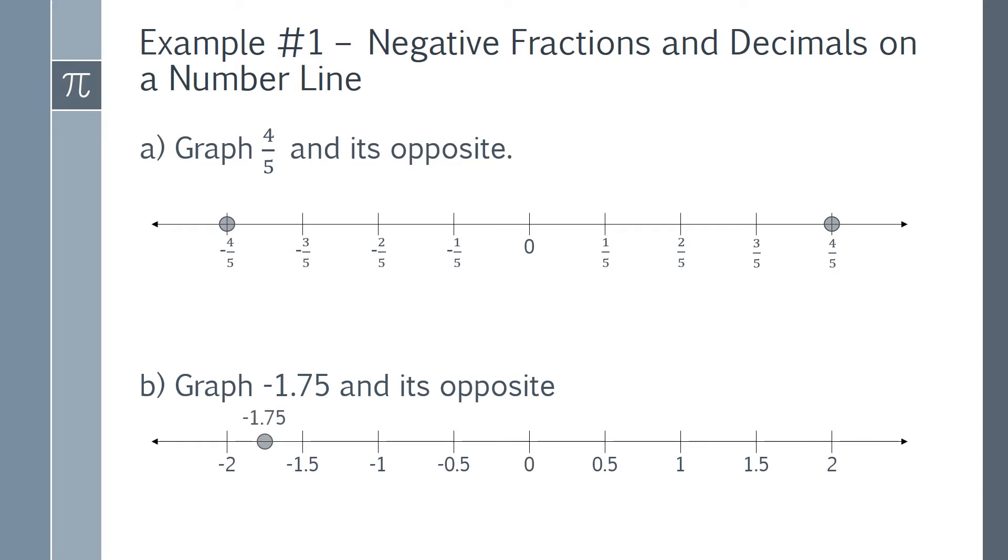Negative 1.75 is halfway between negative 2 and negative 1.5. The opposite of negative 1.75 is positive 1.75, so we'll graph this halfway between 1.5 and 2, and we're done.